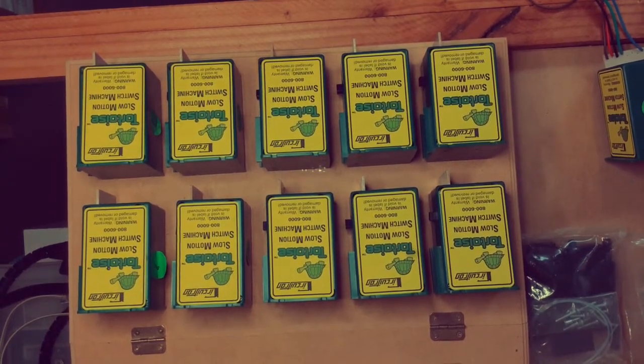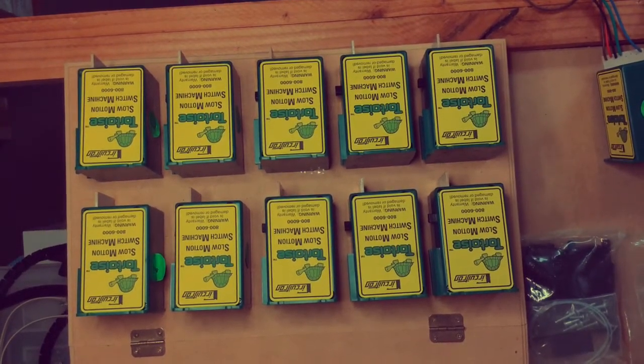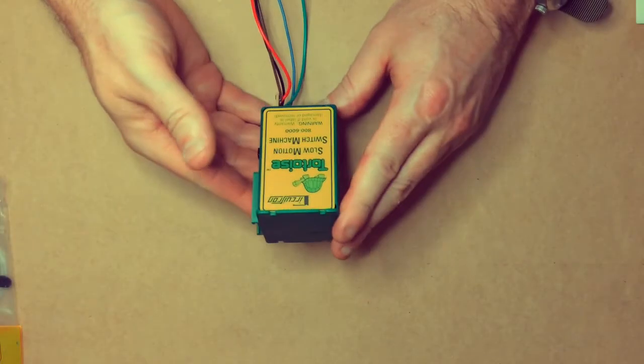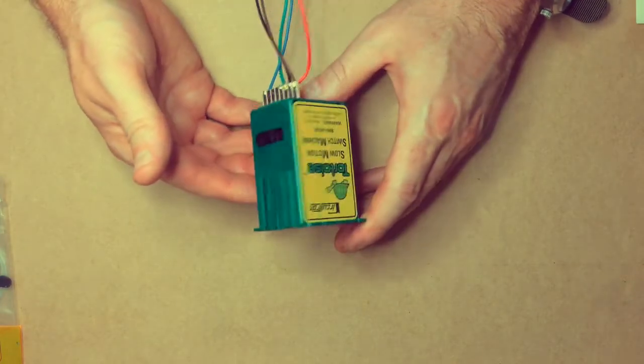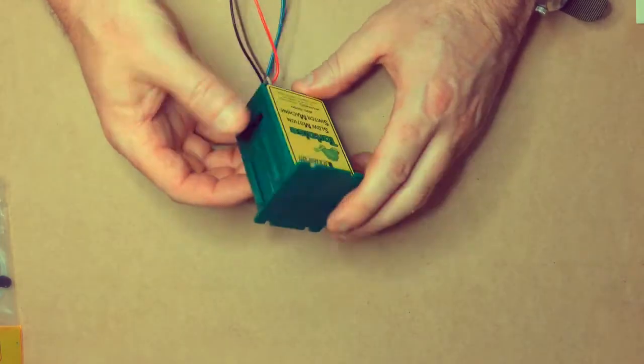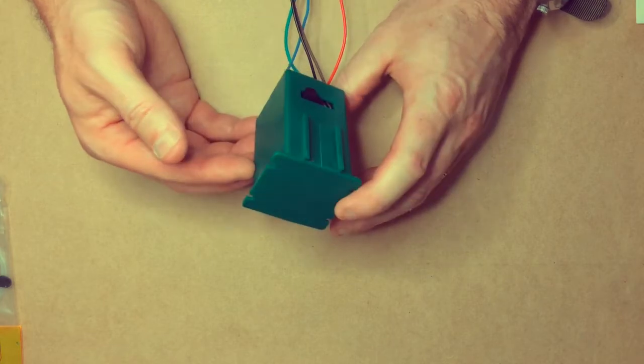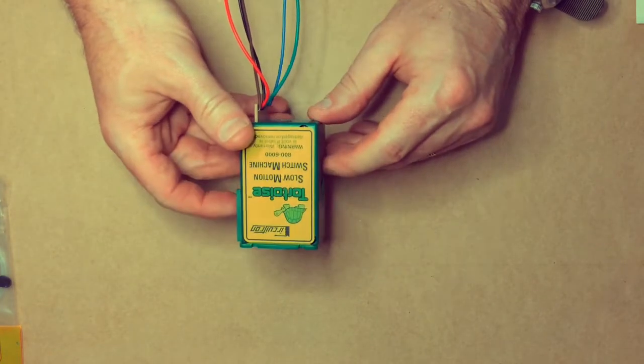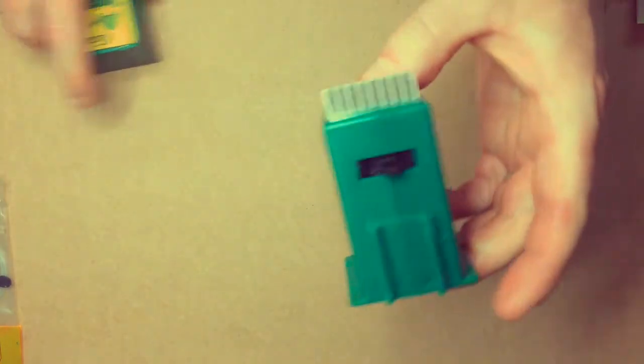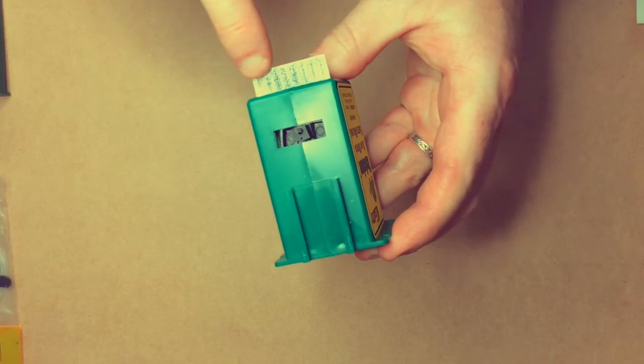So let's get on with it. Okay, so here's our Tortoise motor, made in America by Circuitron. Nothing changed for many years—decades these have been around, very reliable. There must be millions of them around, I guess. These motors come out of the box like so. You've got your tabs here to solder to the motor.